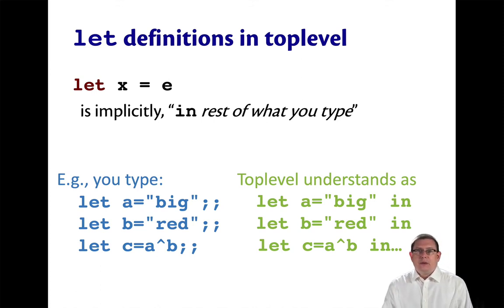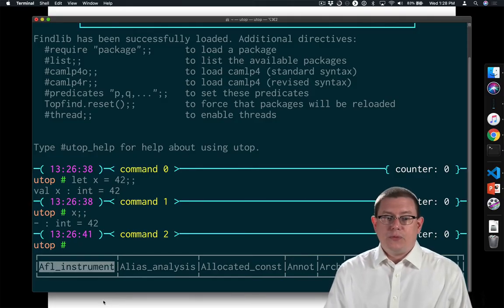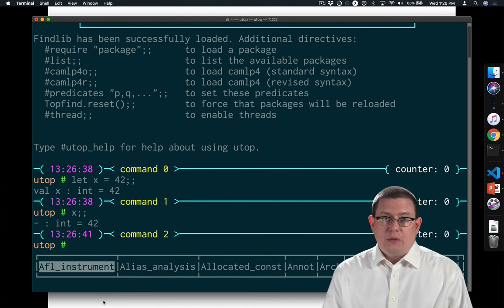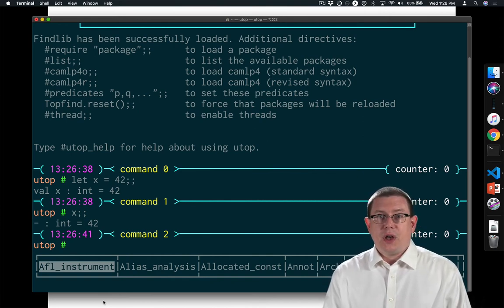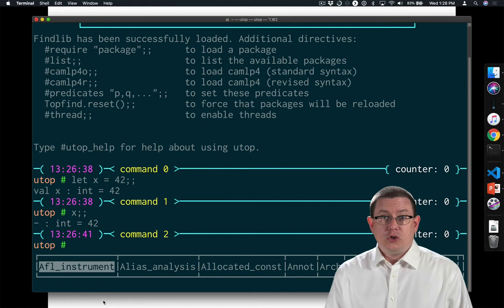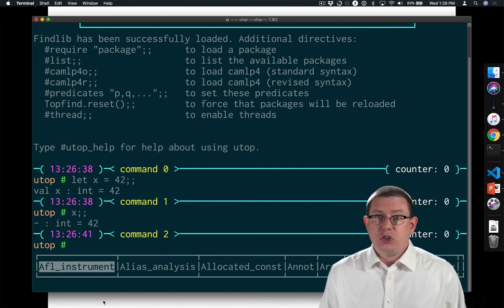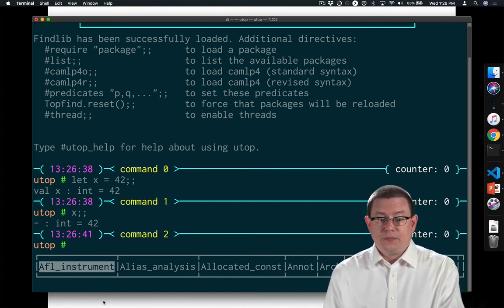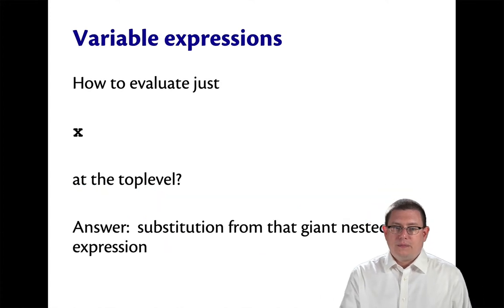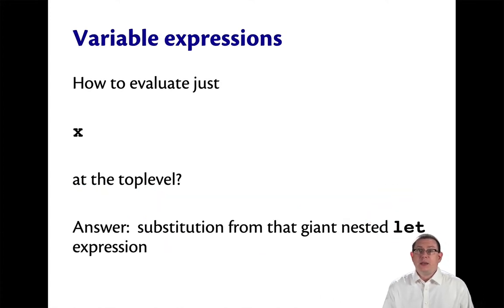Given that, we can now understand evaluation of just variable names as substitution. So really, when I said let x equal 42 here, anywhere else I put x in the future in utop, that's going to be understood as a substitution, just as it always is for let expressions. So that x is going to get substituted away and replaced by 42 anywhere else it occurs in the future.